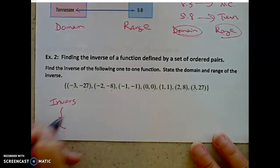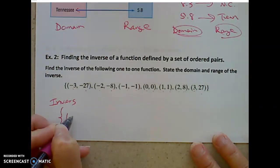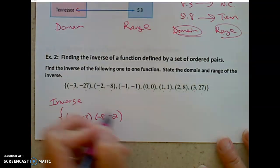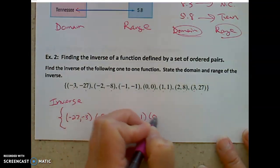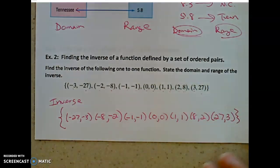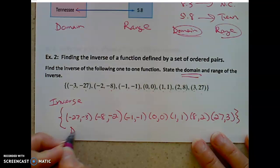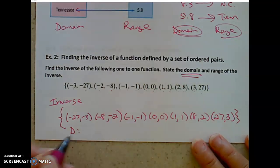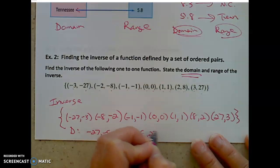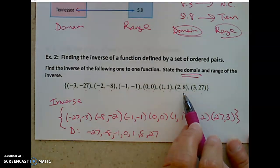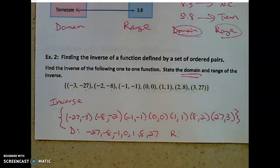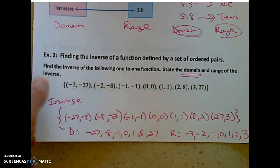The inverse reverses the domain and range. So ordered pairs on the inverse will be: negative 27, negative 3; negative 8, negative 2; negative 1, negative 1; 0, 0; 1, 1; 8, 2; and 27, 3. The domain of the inverse is the set of x values: negative 27, negative 8, negative 1, 0, 1, 8, and 27. The range of the function becomes the domain of the inverse, and vice versa — the domain of the function becomes the range of the inverse.